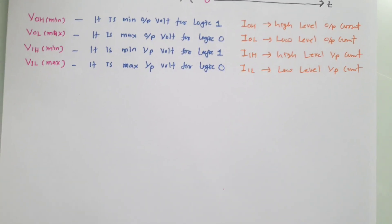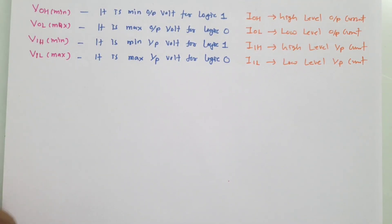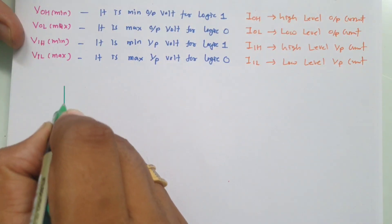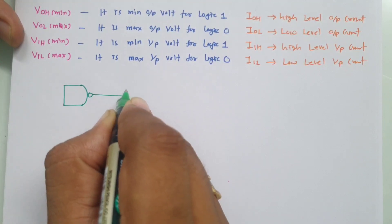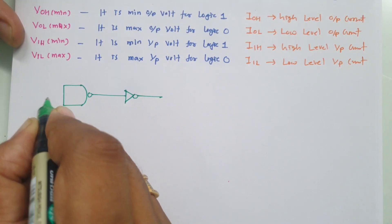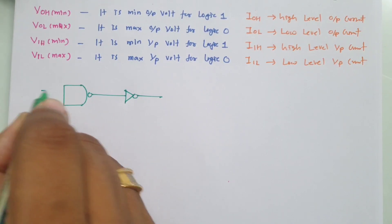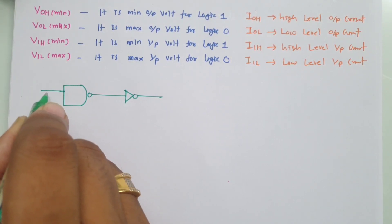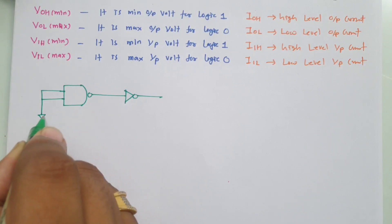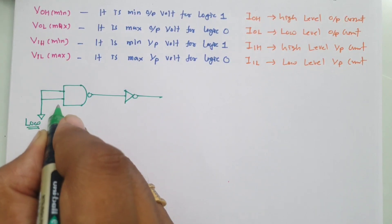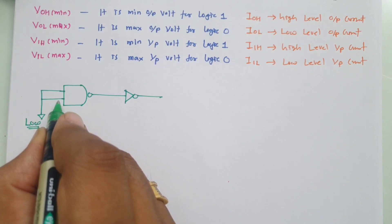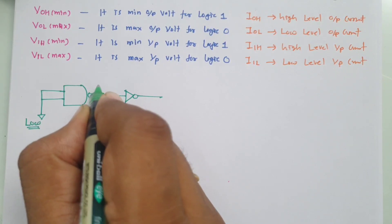Let us try to understand this by a practical example for a clearer idea. Here I will consider a basic circuit where I have one NAND gate connected with a NOT gate. First, I will connect this NAND gate with ground — ground means logic low. If you provide both inputs as logic low, the output will be logic high.